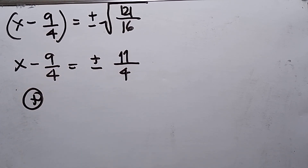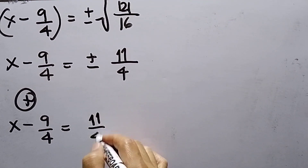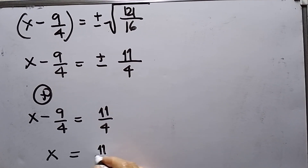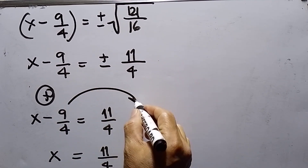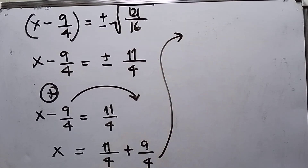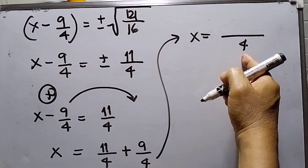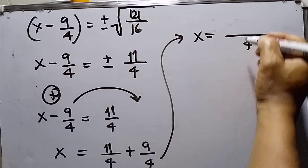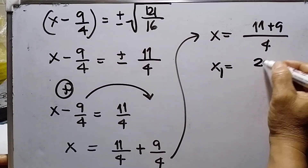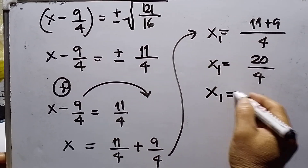So if I use the positive value, this will be x minus 9 over 4 is equal to 11 over 4. Solving for x: x will be 11 over 4, and then 9 over 4 transposes to the right side and becomes positive. Since this is a similar fraction, I need only one denominator, so this will be 11 plus 9 equals 20 over 4. This is x sub 1, so my x sub 1 is 5.